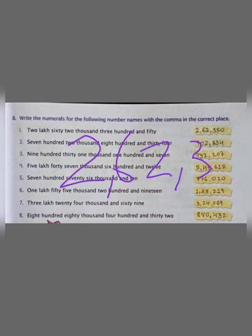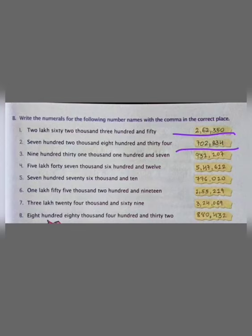So first we will put 2, then comma, then 62000, then comma, then 350 — you can see here. Then next: 702834. This is the international place value system. We will put comma: 702, then 834. Next: 931, then 107. So we will put 931, then comma, then 107. This is also the international place value system.